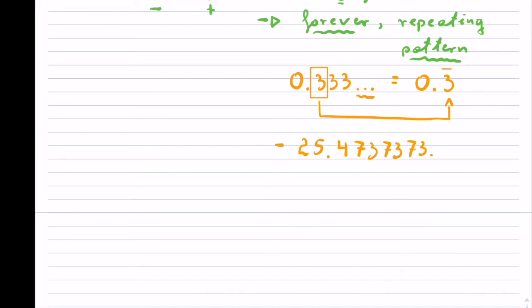7.3, 7.3, and it goes on forever. So my pattern here, which is the 7.3 right there, is repeating.